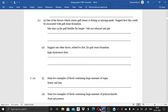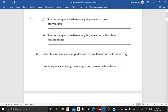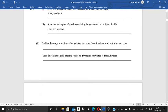So over here the first question has been finished. Now we are coming on the second question. It's written over there, state two examples of foods containing large amount of sugar. And the answer is honey and jam. Then next question is, state two examples of food containing large amount of polysaccharide, that is pasta and potatoes. Then next question, outline the ways in which carbohydrates absorbed from food are used in the human body. It's used in respiration for energy, stored as glycogen, converted to fat and stored.